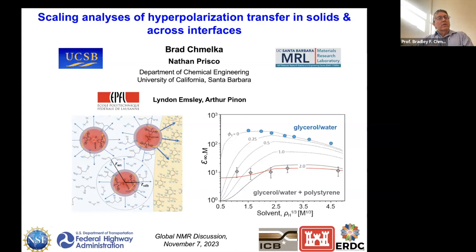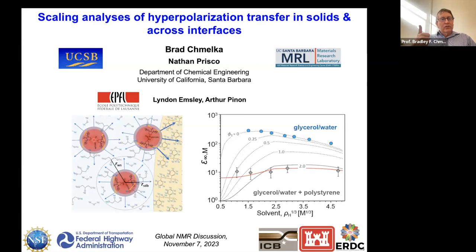From that bi-radical, which has a high degree of electron spin polarization, we transfer polarization into the nuclei that will take it to the location where we can beneficially use it. This involves, principally, cross-effect DNP, but I would assert that the aspects I'm going to be talking about are general for hyperpolarization from any source.